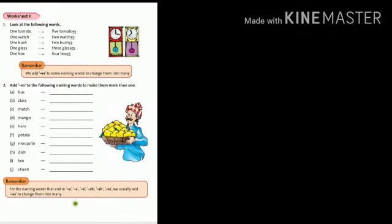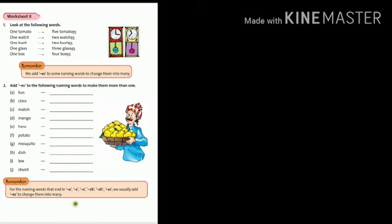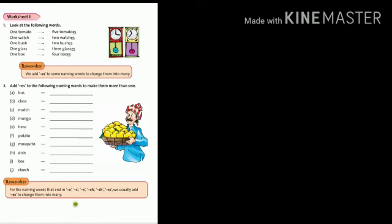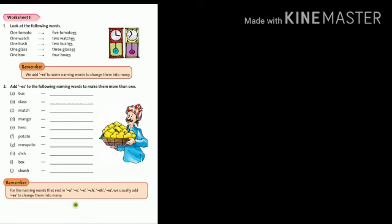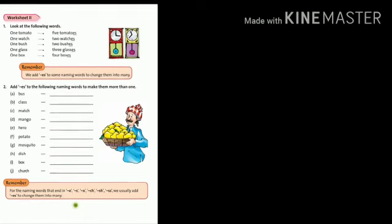Now, on page number 19, worksheet 2. First, remember these points. We add ES to some naming words to change them into plural. And the words that end in O, S, X, CH, SH and double S. We usually add ES to change them into many.